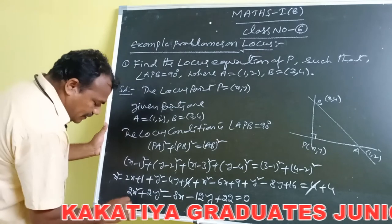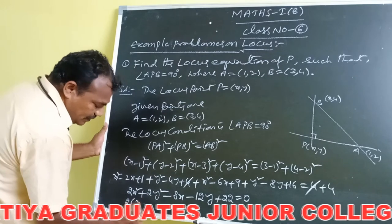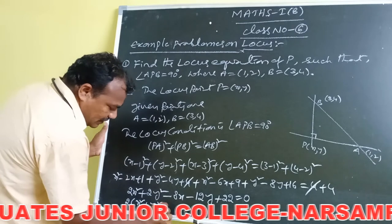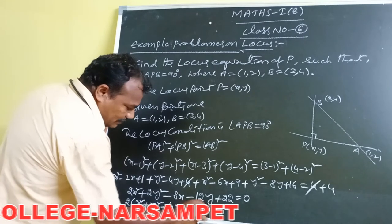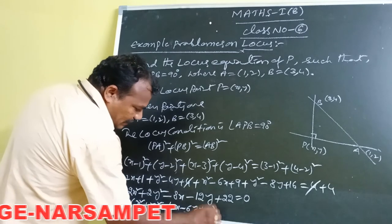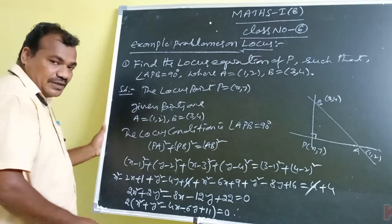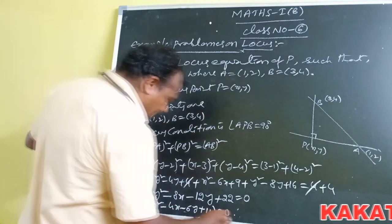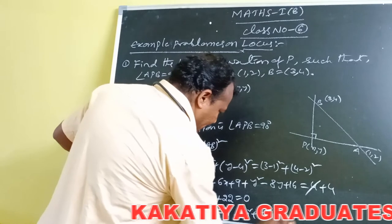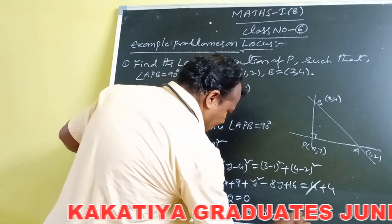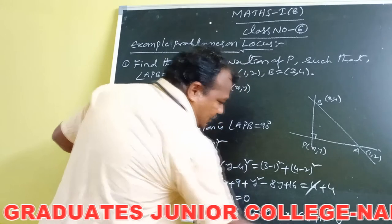Taking 2 as common from all terms: x² plus y² minus 4x minus 6y plus 11 is equal to 0. Finally, the locus equation of P is x² plus y² minus 4x minus 6y plus 11 is equal to 0.